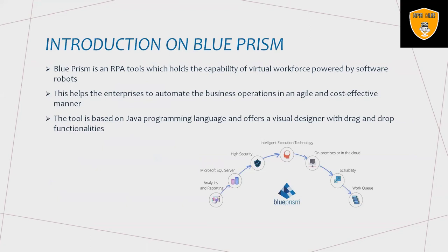Blue Prism is a software company that develops robotic process automation software that enables businesses to automate complicated end-to-end procedures. It is an RPA tool which holds the capability of a virtual workspace powered by software robots. Blue Prism created the virtual workspace platform concept and is working on a robust, highly scalable, secure, and dependable enterprise RPA platform.